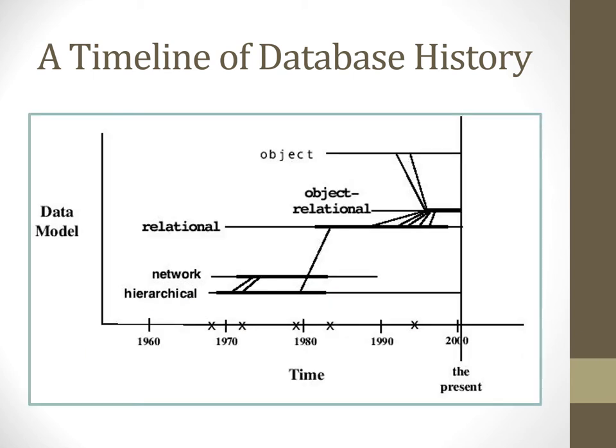Here we have a brief history of data models specifically. In the 1960s we had the hierarchical model, then in the 1970s the network model, followed by the relational database and object-relational models. Object database models were coming out before or in the early 2000s, because object-oriented programming was already getting popular by then.